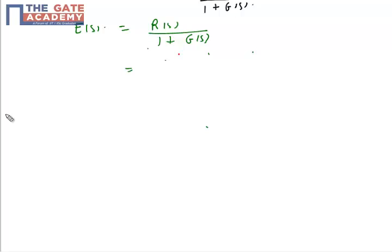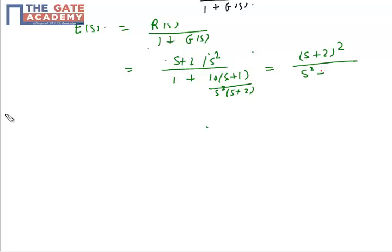This will be s plus 2 upon s square upon 1 plus 10(s+1) upon s squared (s+2). Just take the LCM and solve it. You will get (s+2) whole square upon s squared plus 10(s+1).